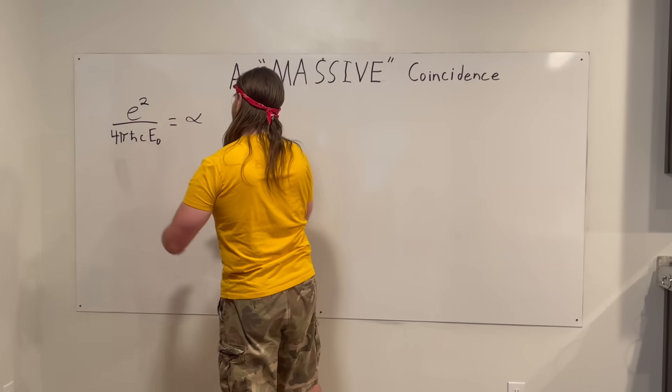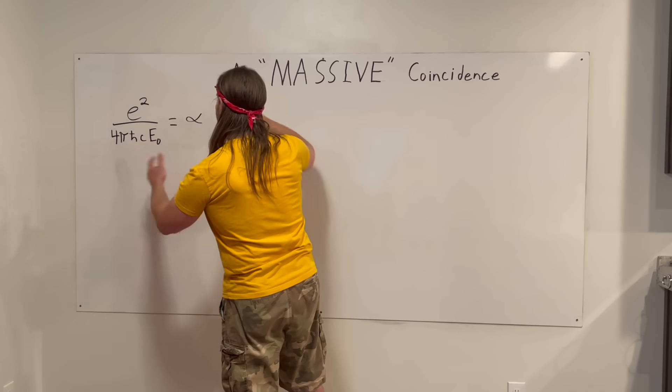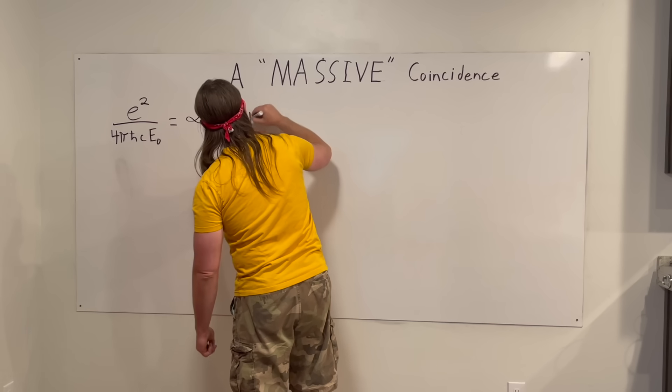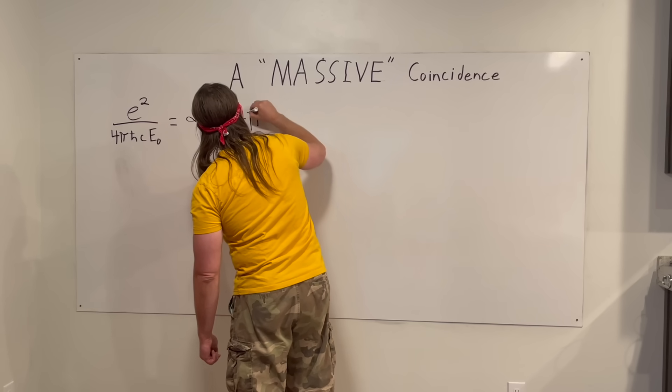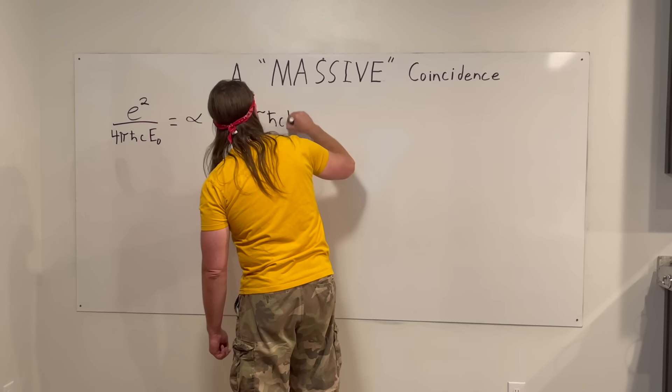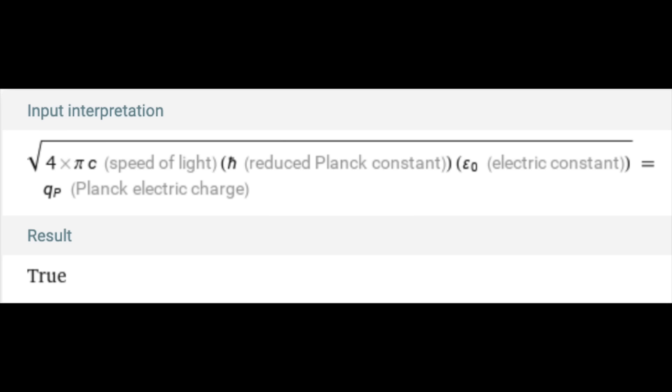So this term, when you actually write it all out, it gives you some number to the power of like 36 and it says no identifiable units. It actually ends up being charge squared, which is interesting. So when we put all this in, we look for its root. It ends up being a Planck charge. That's pretty neat.